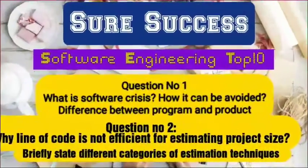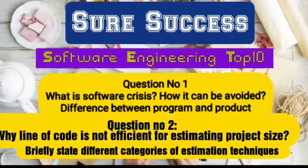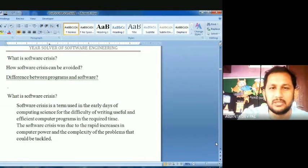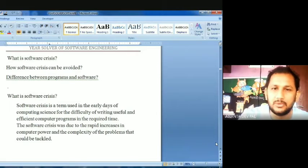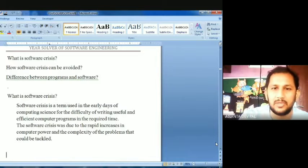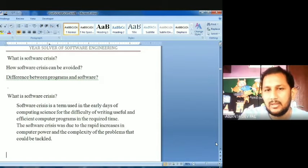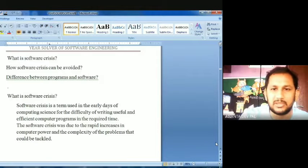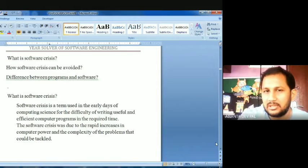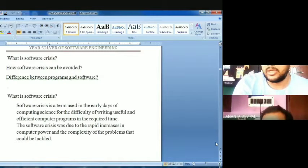I am going to discuss software engineering top 10 questions, including software crisis, how software crisis can be avoided, and the difference between programs and software. Software crisis is a term used in the early days of computing science for the difficulties of writing useful and efficient computer programs in the required time. The software crisis was due to the rapid increases in computer power and the complexity of the problems that could be tackled.